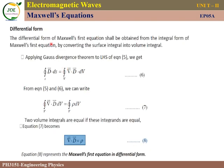Next, we convert to differential form. As per the Gauss Divergence theorem, the surface integral of D vector dot dS equals the volume integral of del dot D vector into dV. That is, a surface integral over a closed surface can be converted to a volume integral using divergence.